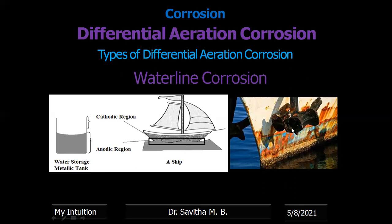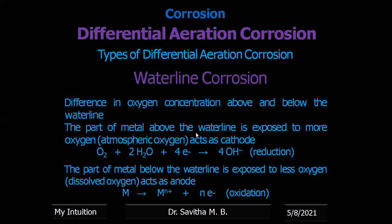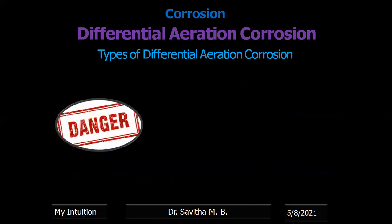Here there is an example of a ship which is half immersed in water — the part below the water level is the anodic region. The more oxygenated area above the water line absorbs oxygen and liberates hydroxyl anions as the product of the cathodic reaction. The metal in the less oxygenated region liberates electrons and metal ions, and these metal ions and hydroxyl ions combine to form the corrosion product.